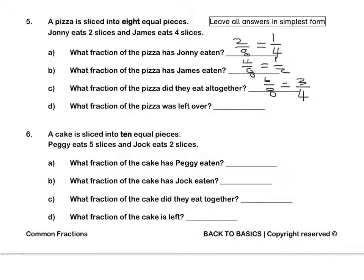Finally, what fraction of the pizza was left over? 6 out of the 8 pieces were eaten, therefore 2 eighths are left over. In simplest form, 1 quarter. Pause this video to complete Question 5 and 6 by yourself.